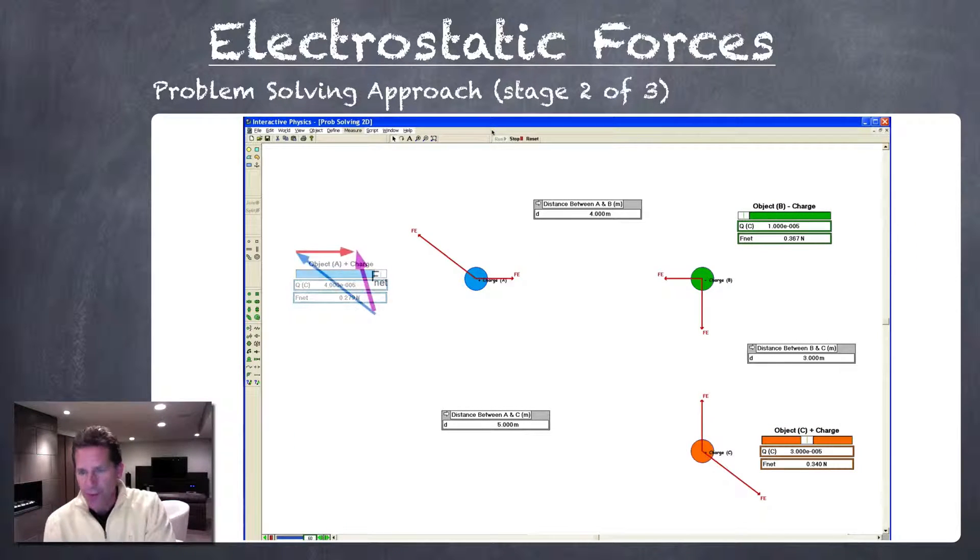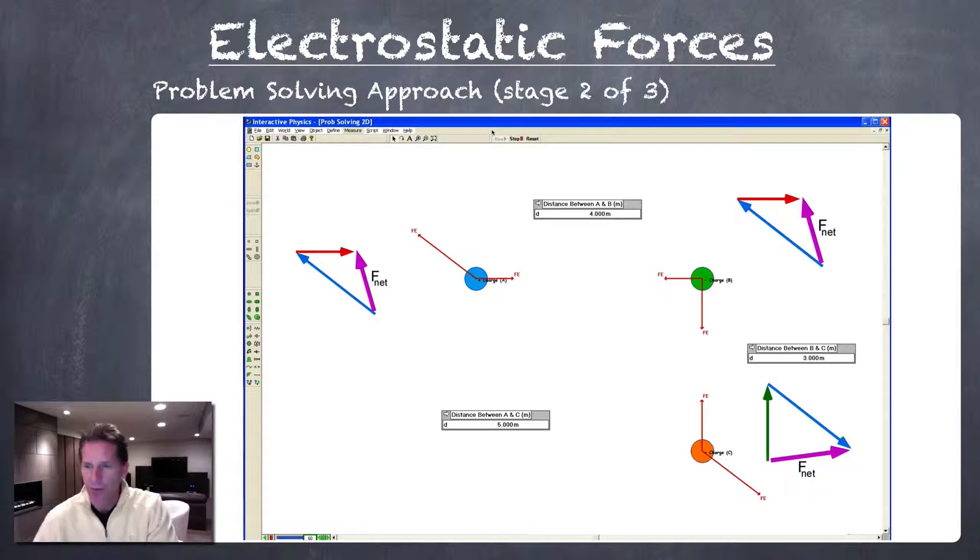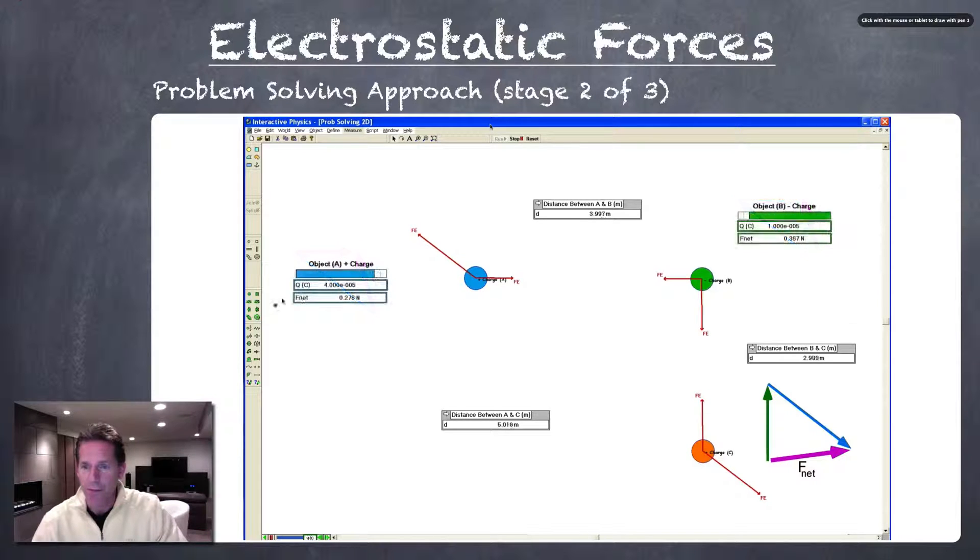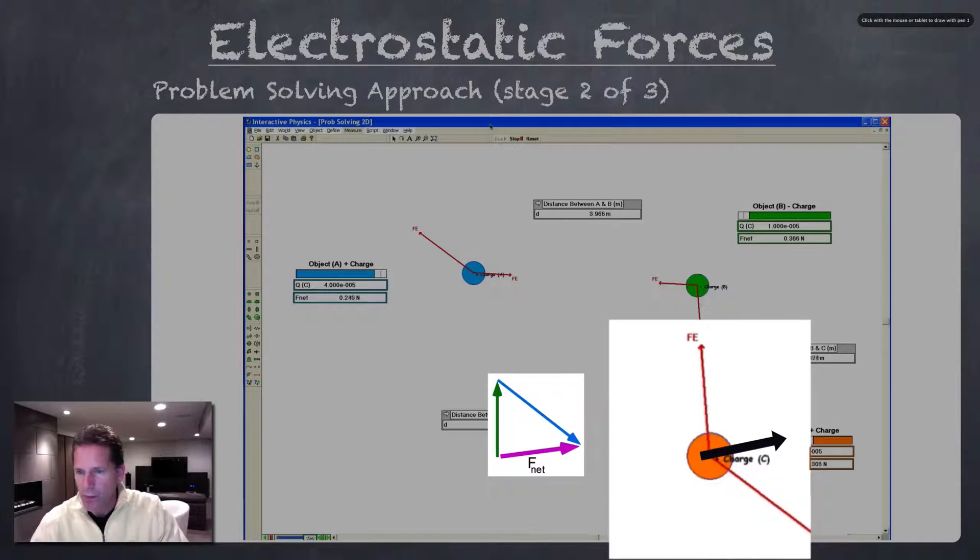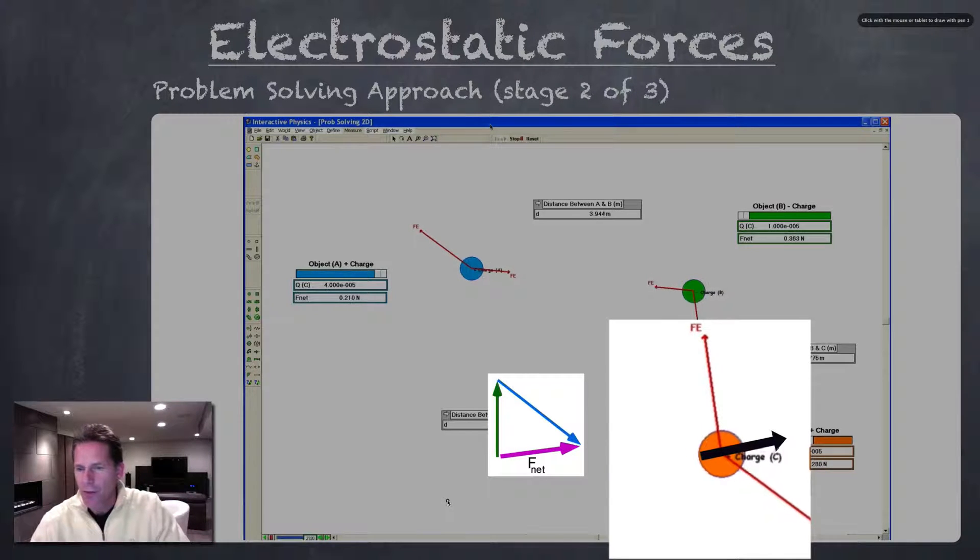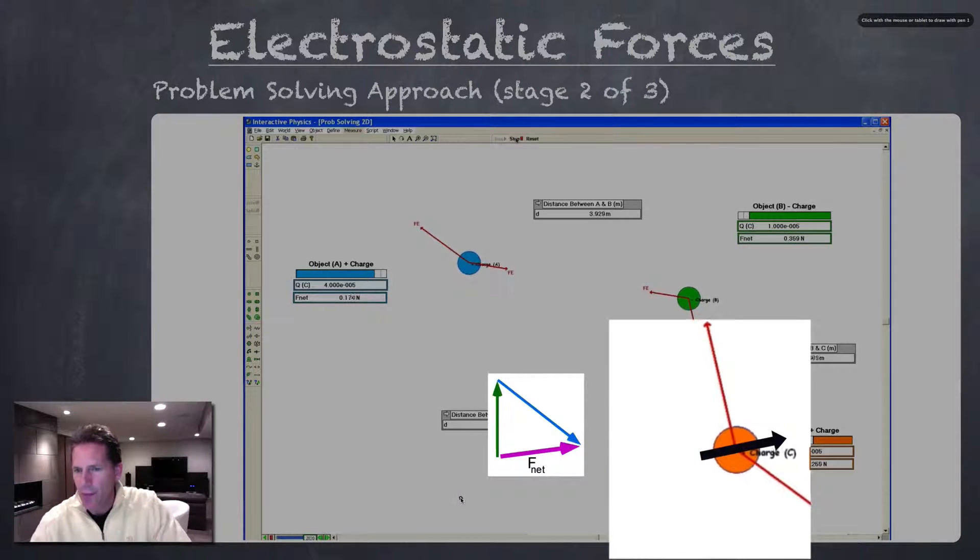Initially, we just see the charges as they appear and notice that the vectors that we drew are matching what we had in our vector analysis. If we watch closely down here on the orange charge, notice the path that moved was slightly to the north of east.